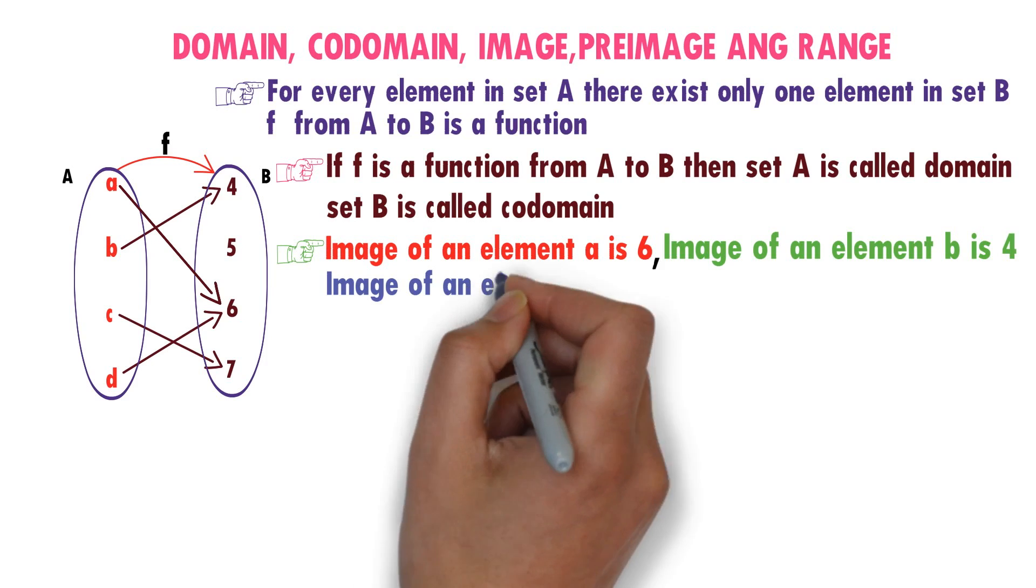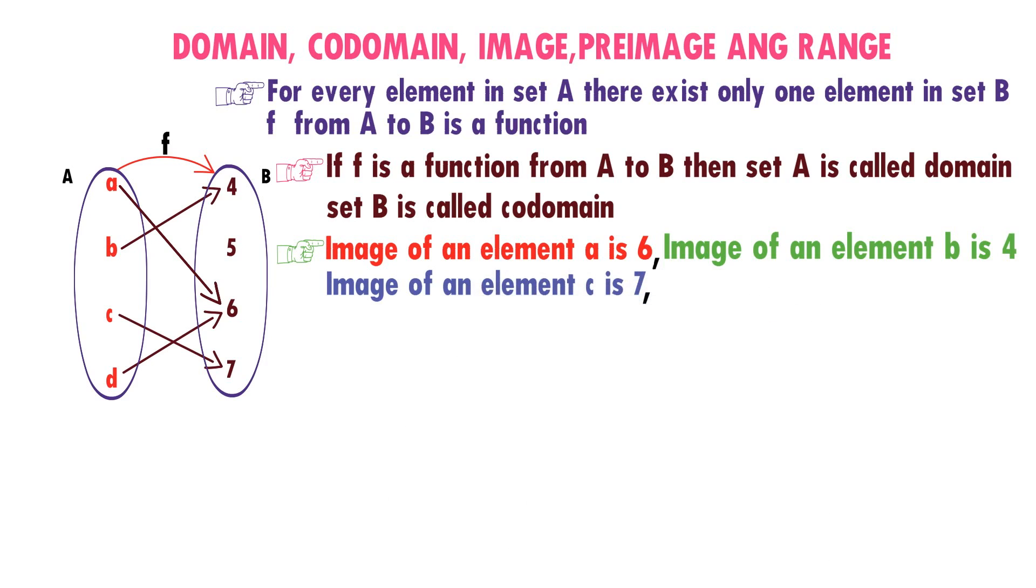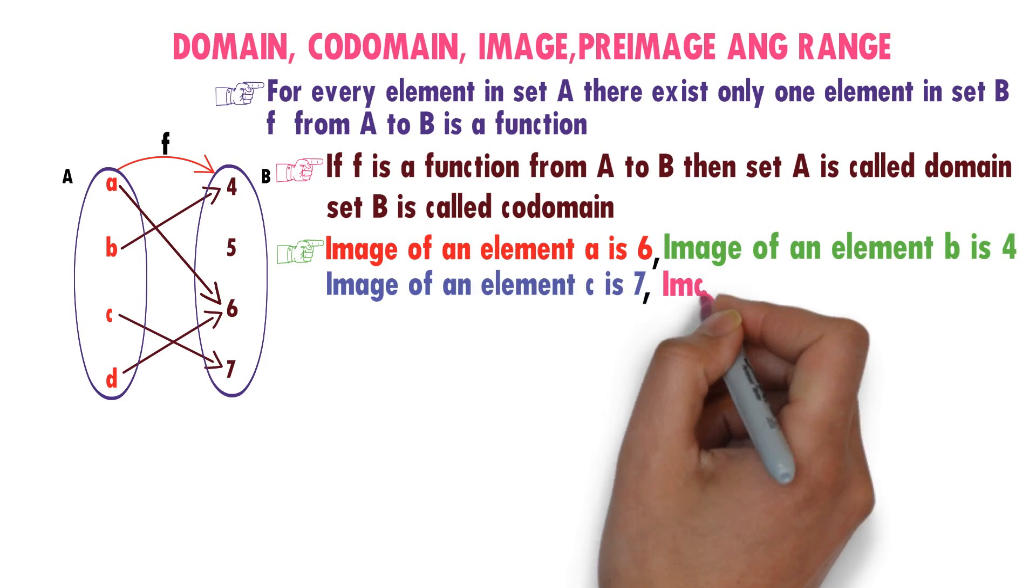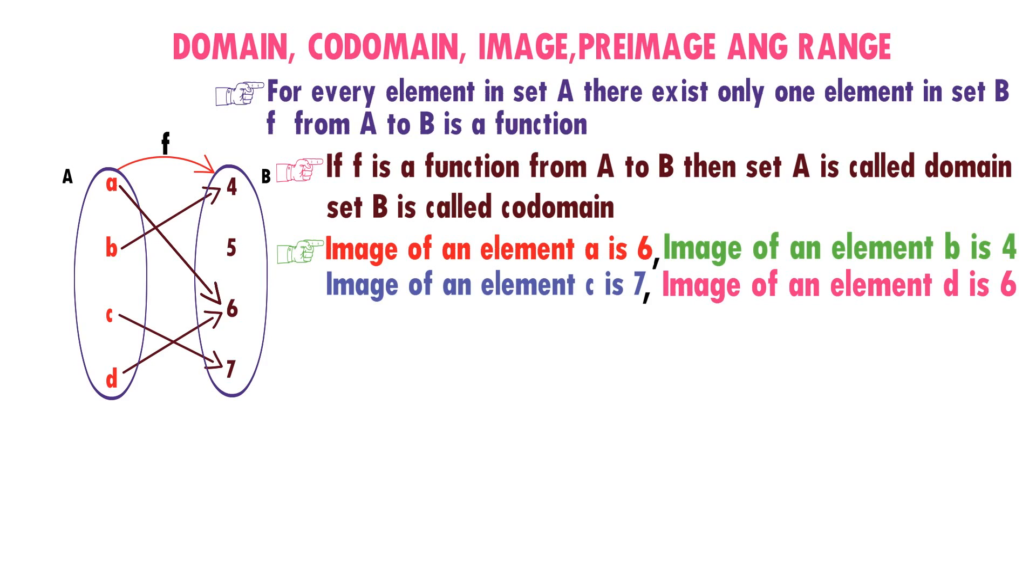Image of an element c is 7. Then, image of an element d is what? 6. Very good.